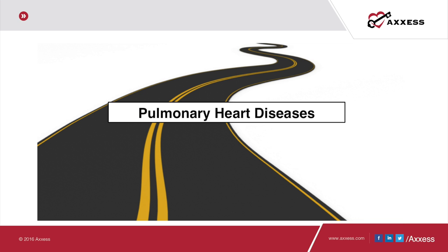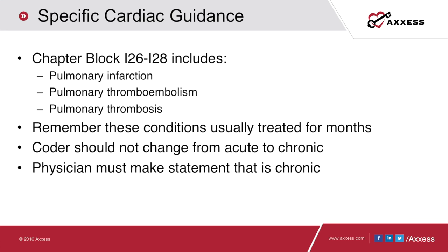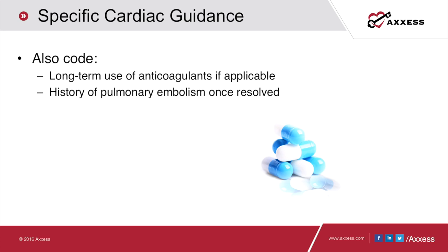Let's talk about pulmonary heart diseases. Chapter block I26 to I28 includes pulmonary infarctions, pulmonary thromboembolisms, and pulmonary thromboses. Remember, these conditions are usually treated for months — don't change the diagnosis from acute to chronic unless the physician makes that statement. We also need to code long-term use of anticoagulants if applicable. Once a pulmonary embolism has resolved, you will need to continue to code a history of pulmonary embolism.